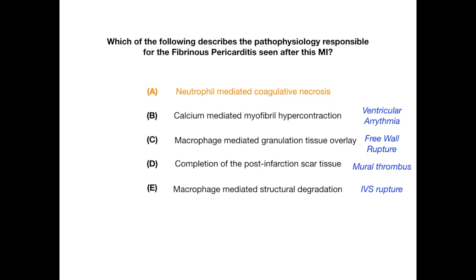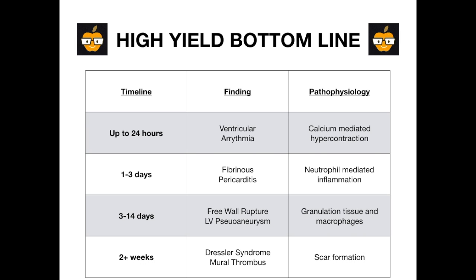The high-yield takeaway is the evolution of a myocardial infarction. Up to 24 hours: ventricular arrhythmia due to myofibril hypercontraction from excess calcium. One to three days: fibrinous pericarditis — inflammation of the pericardial sac from neutrophils acutely responding to the MI. Three to 14 days: free wall rupture and left ventricular pseudoaneurysm, due to granulation tissue and macrophages. Two or more weeks: mural thrombus and Dressler syndrome, due to actual scar formation.